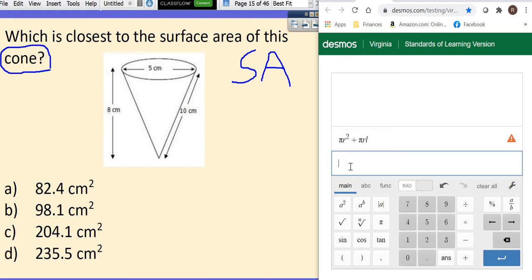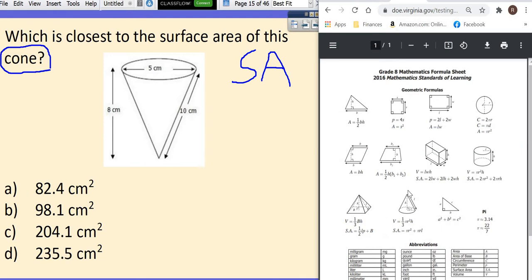And we're going to ask ourselves again, the calculator does not know what an r is. It does know what π is, but it doesn't know what the r is, and it doesn't know what the l is. So we have to give it that information. So first things first, I'm going to go back to the formula sheet. If you look at the cone, it shows you in the picture that l is the slant height. It's the side. And radius is from the middle to the edge.